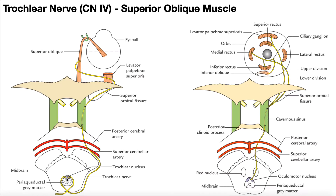Here are the trochlear nuclei, very closely associated with that periaqueductal gray matter. But there's a big difference here. Notice that when we look at, say, the left trochlear nucleus, the axon that comes out of that doesn't stay on the same side — it actually loops around the periaqueductal gray matter and goes to the contralateral side. Whereas the axons that come out of the oculomotor nucleus actually stay on the same side. So that's a big difference.